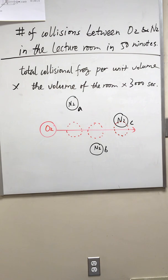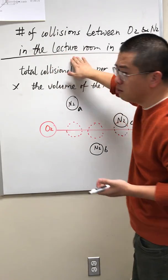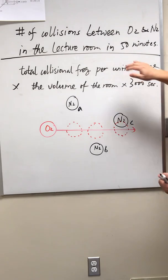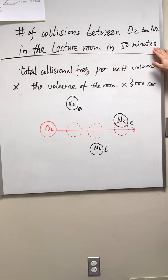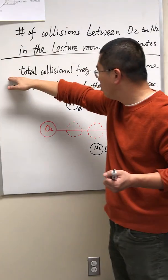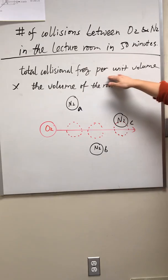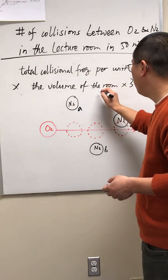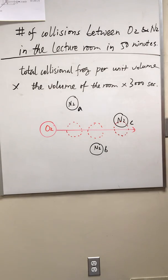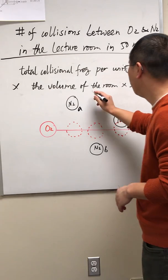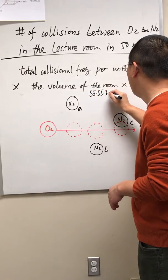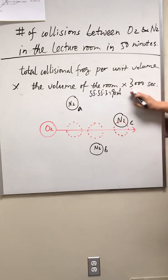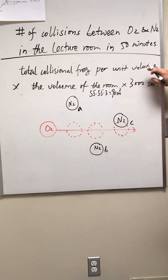I will calculate the total number of collisions between oxygen molecules and nitrogen molecules in a typical lecture room at Central Washington University within a 50-minute time period. This is an actual exam question on kinetics. First, we need to compute the total collisional frequency per unit volume, and then multiply that by the actual volume of the lecture room, which is roughly 5.5 by 5.5 by 3 cubic meters, so roughly 90 cubic meters.